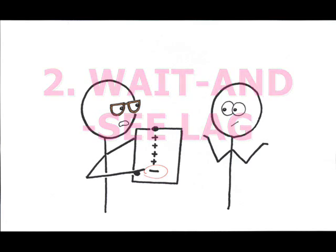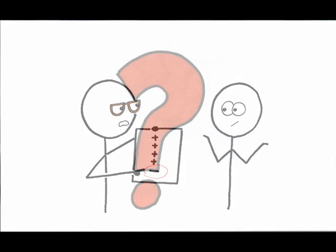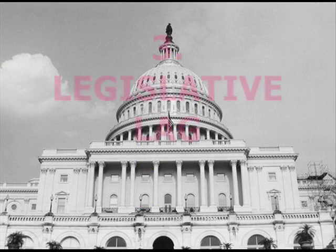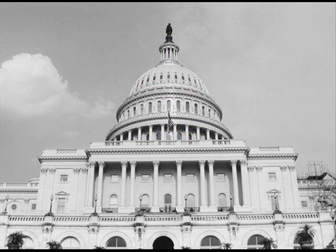Third, so you wait and see, and after the next set of data, realize there is indeed a downturn in the economy. Now the question is, what to do about it? In a society like ours, the decision must come from our policymakers, so there's a legislative lag as Congress tries to come up with a solution.